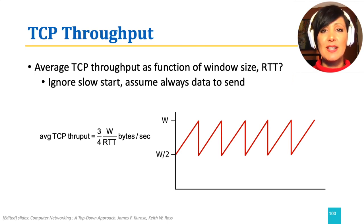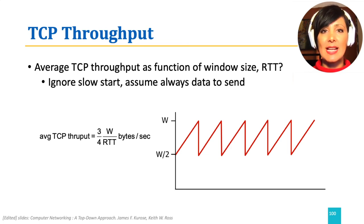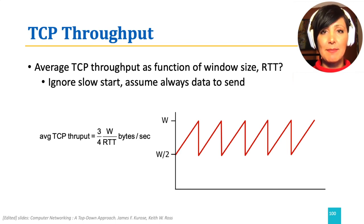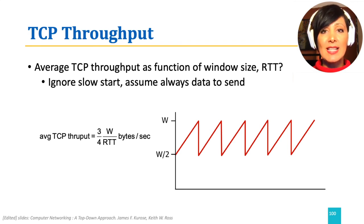Adding a simplifying condition: let's ignore slow start and assume the sender always has data to send. The average TCP throughput in this scenario will keep changing between the full window size and half the window size, due to the AIMD mechanism. TCP throughput will be three-fourths of the window size divided by RTT, in bytes per second.